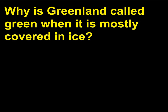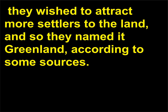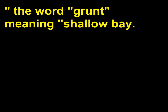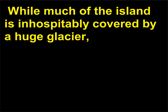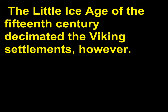Why is Greenland called green when it is mostly covered in ice? When Scandinavian explorers first discovered the large island north of Iceland in the late 10th century, they wished to attract more settlers and named it Greenland, according to some sources. Another explanation is that the island was actually named Gruntland, meaning 'shallow bay,' and the name was later mistranslated on maps as Greenland. While much of the island is covered by a huge glacier, the southern coastline does have vegetation and good fishing grounds. The Little Ice Age of the 15th century decimated the Viking settlements.